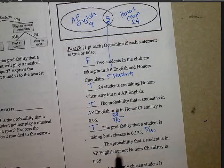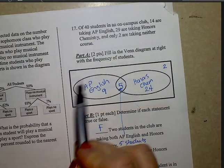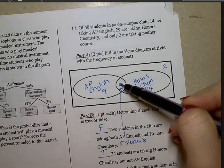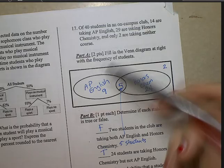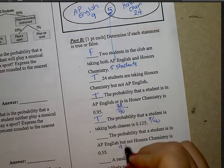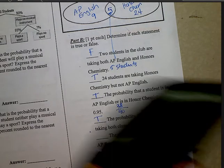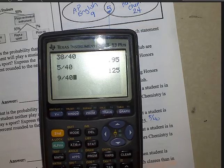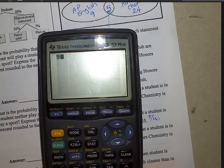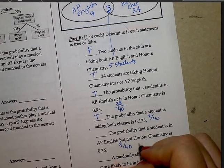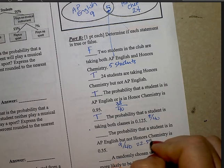The probability that a student is in AP English, but not Honors Chemistry. So these are all AP English, but we don't want the Honors Chemistry portion. So let's take 9 out of 40. 9 divided by 40 is 0.225 or 22.5%. Not this number. False statement.